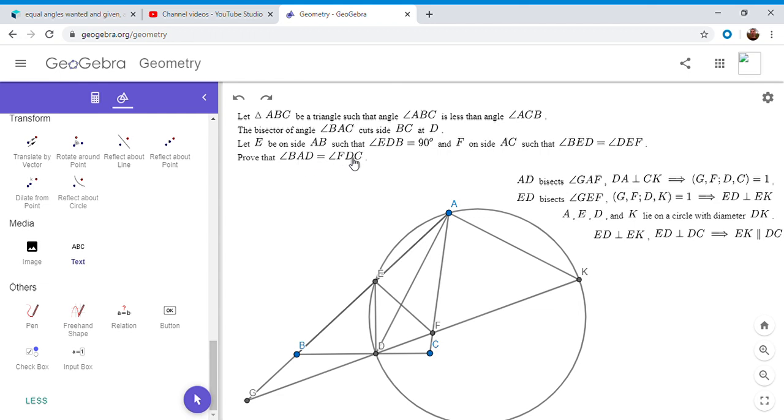What do we ultimately want to show? We want to show angle BAD is equal to angle FDC. We can do that by an angle chase now, because since we know that EK is parallel to CD, we know that angle EKD is equal to angle FDC. That comes in handy in our angle chase. I'm going to show you that right now. I drew in EK, and we have angle BAD equals angle EAD, which equals angle EKD—that's where we use that this is a cyclic quadrilateral. Angle EKD equals angle KDC—that's where we use that EK is parallel to CD. And angle KDC equals angle FDC. That solves the problem.